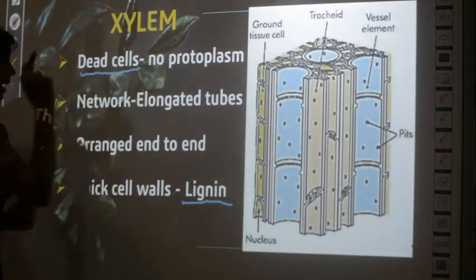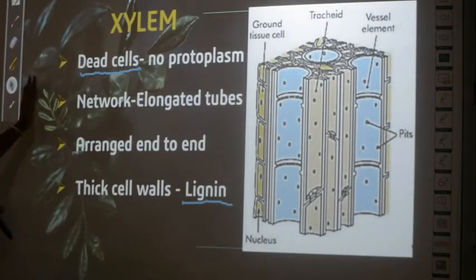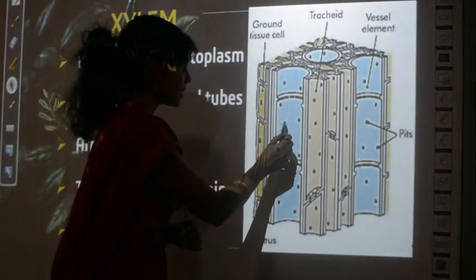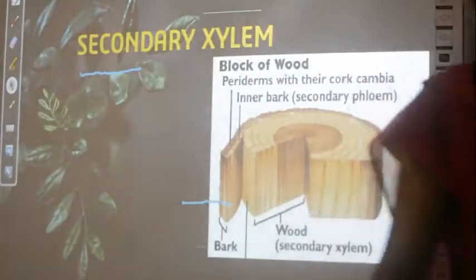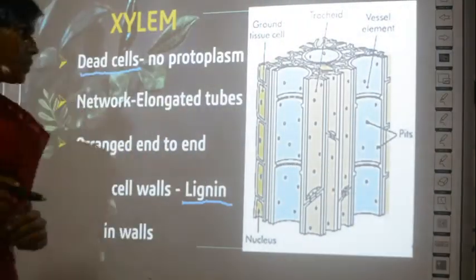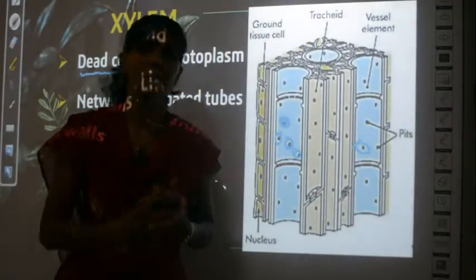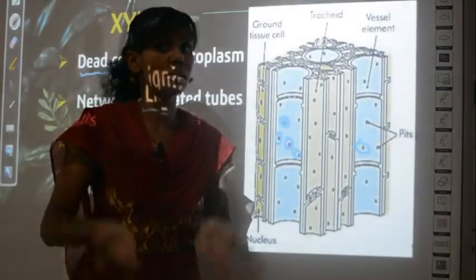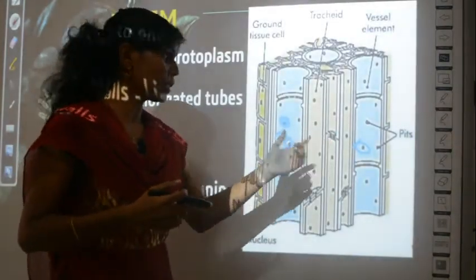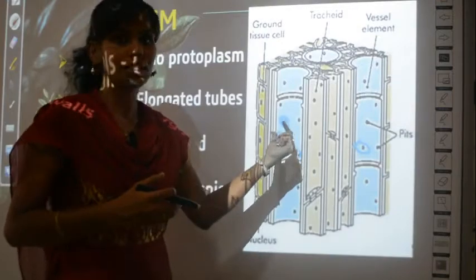Dead cells and lignin instead of cellulose are the two unique characters of xylem. Xylem also has pits in their walls — pits means holes. You can see many holes in the structure. Since the function of xylem is to transport water, water is distributed to other parts of the plant through these pits or holes.